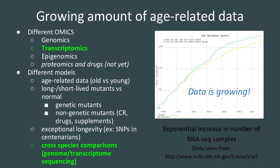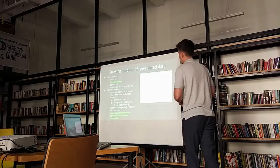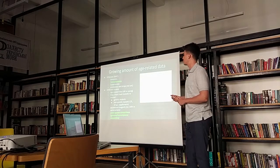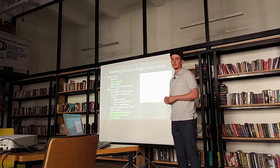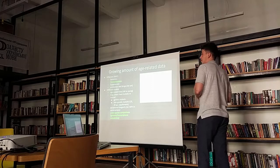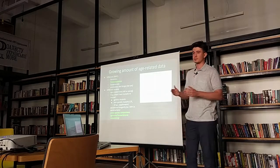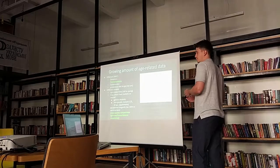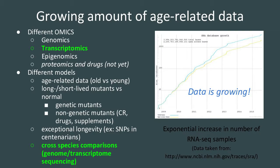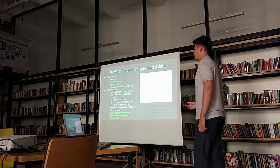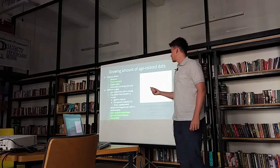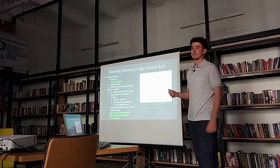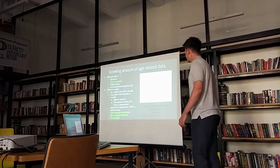In the big picture, there is a lot of age-related data in today's scientific databases — different kinds of omics data from genomics, transcriptomics, epigenomics, and proteomics. When one does aging research, one looks at different models: old versus young, long- versus short-lived mutants, and species with different lifespans. The cross-species project examines transcriptomics data from RNA-seq across species with different lifespans. Data is growing, so let's analyze it.